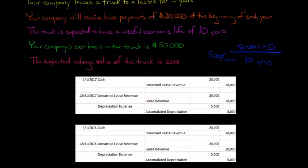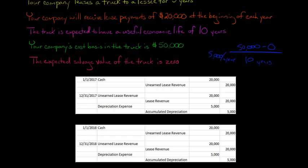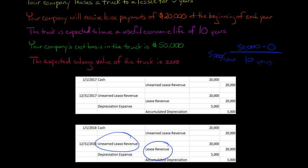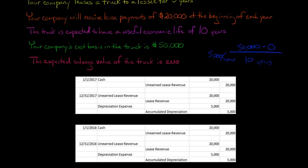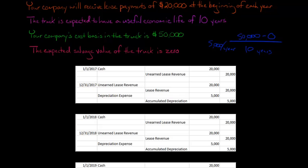In year two, we get cash again on January 1st, but again it's unearned — we haven't earned it yet. We're receiving the payments at the beginning of the year. It would be different if we were getting the payment at the end of the year, but usually the first payment is made up front. So we record the unearned revenue, then release it at December 31st — we debit unearned revenue and credit lease revenue for $20,000. Also going to the income statement is depreciation expense of $5,000, using straight-line depreciation.